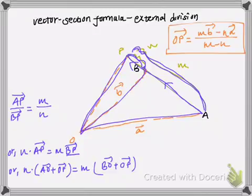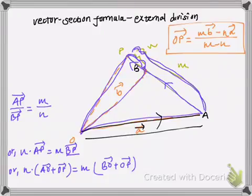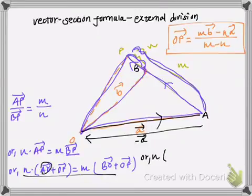Now we know that vector OA is equal to small vector A. Vector AO means the negative of this vector A since the direction is opposite. So here we can write n times, for AO I can write negative vector A, and for OP I will leave it as it is.